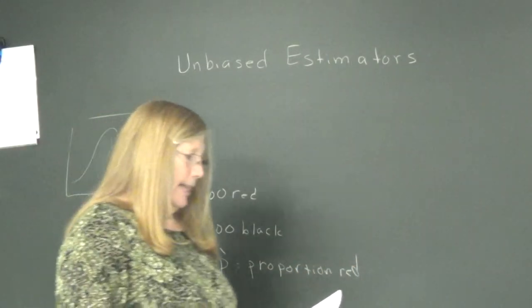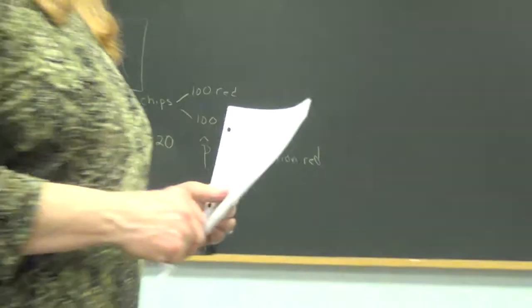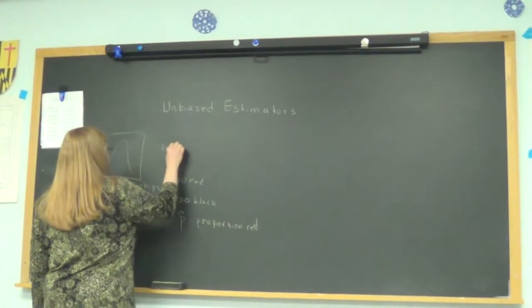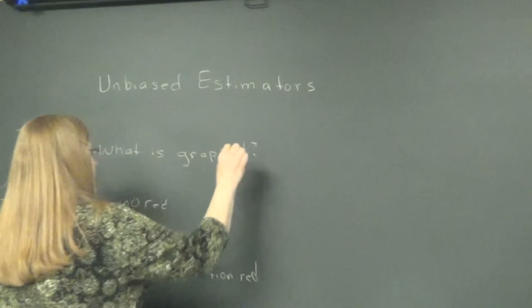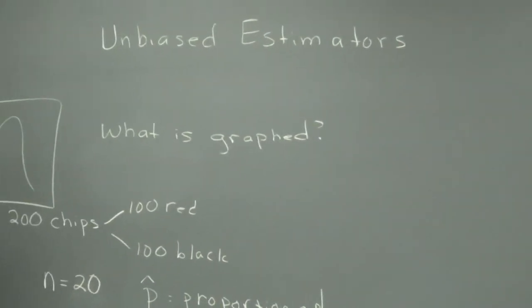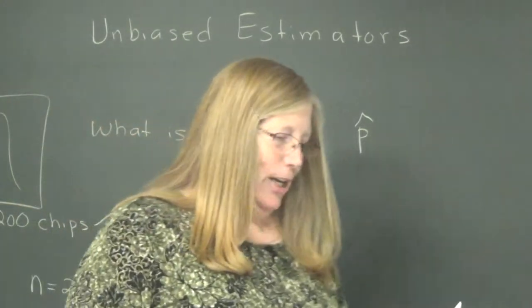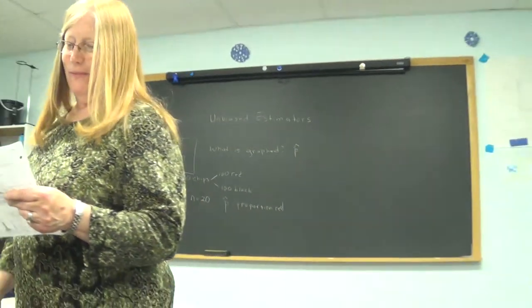All right, so that's what that little graph was, just like it was on last Thursday. So what is graphed? I want you to answer that question here, in the space. What is actually graphed? And the answer is that we're graphing P hat on there. I guess they didn't have a symbol for hat, so they put it in letters.